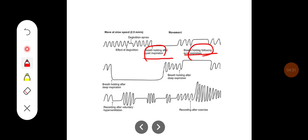During inspiration the person holds more oxygen, which stimulates the respiratory centers only quite late. Similarly, after deep inspiration, breath holding time is greater than after deep expiration. After deep expiration, more oxygen is available and less carbon dioxide is produced.